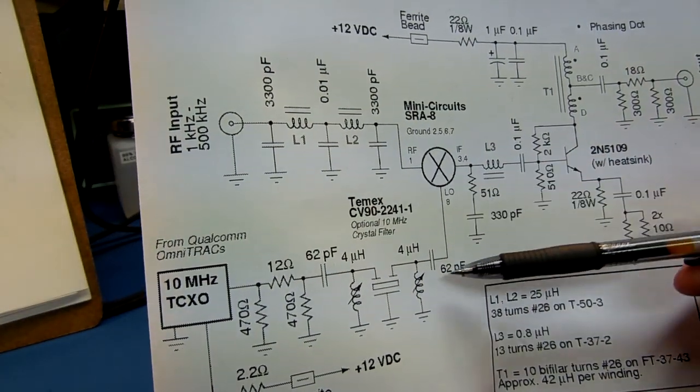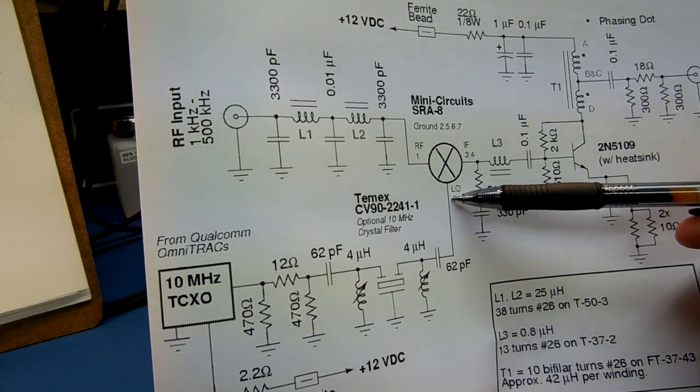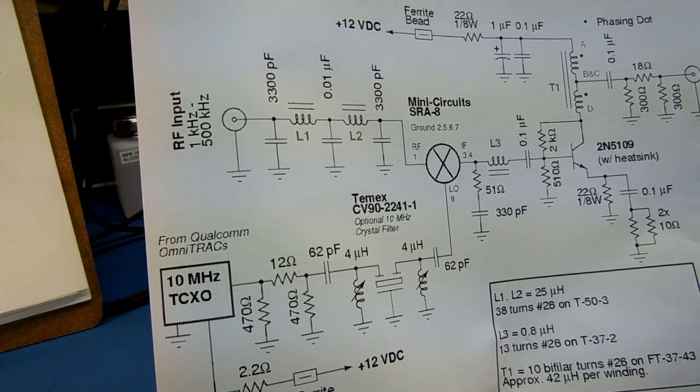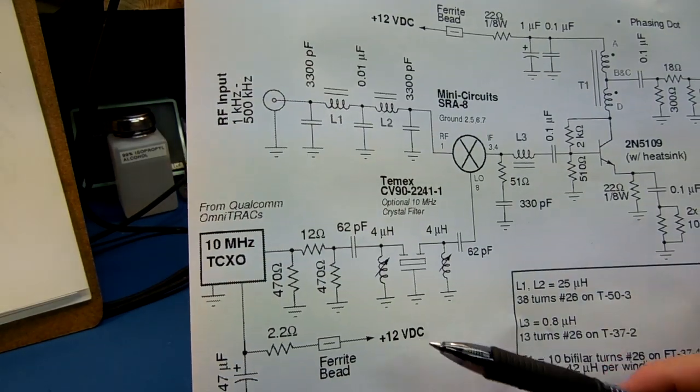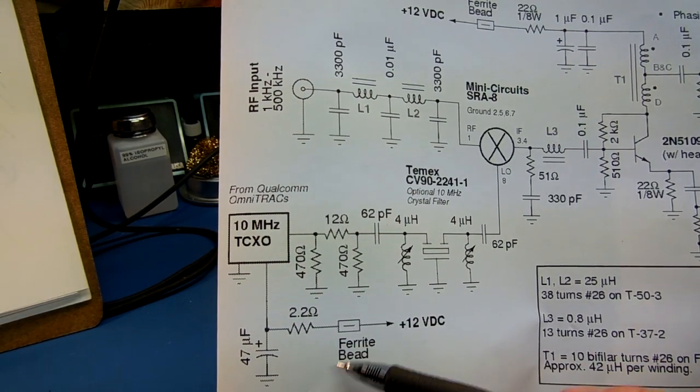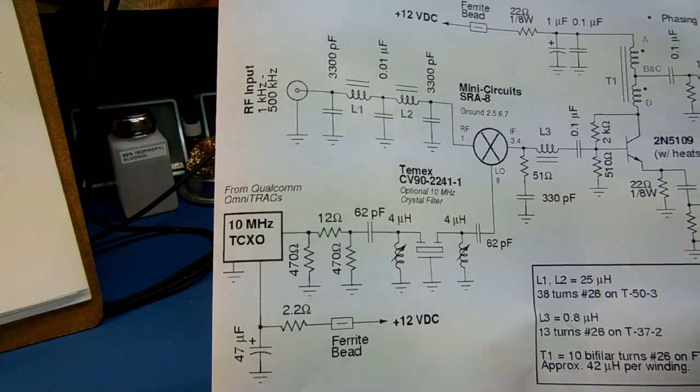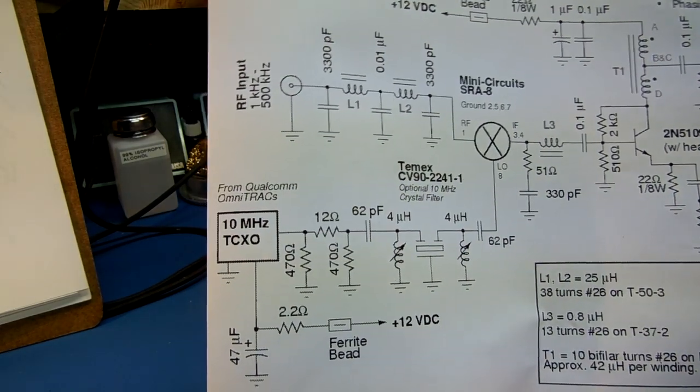It needs around 7 dBm. There's a little bit of loss. I think it's like around plus 5 I'm actually feeding it, but it's still no problem. We have a little standard bypass and decoupling circuit just to knock down any noise which might be coupled in or out of the oscillator itself.